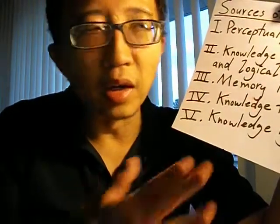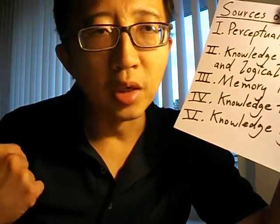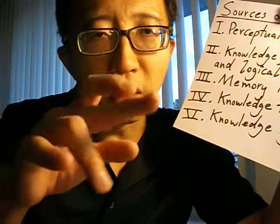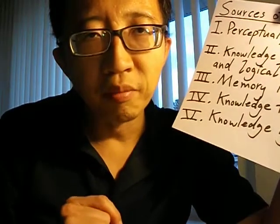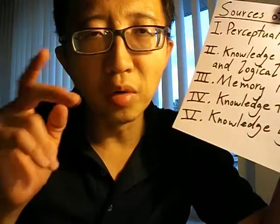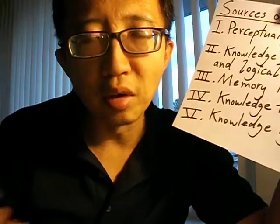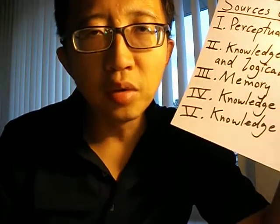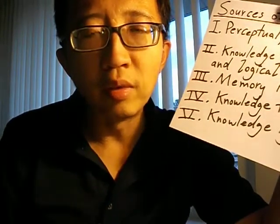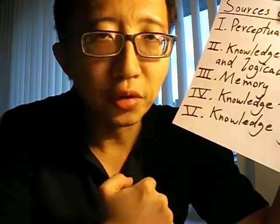Another example of mathematical and logical truths would be basic truths of geometry. For example, I can know that something that has three sides must be a triangle. I can form images of triangles in my head and recognize something with three sides as being a triangle even if no physical triangles exist in the real world. So the basic truths of geometry also fall under knowledge of mathematical and logical truths.